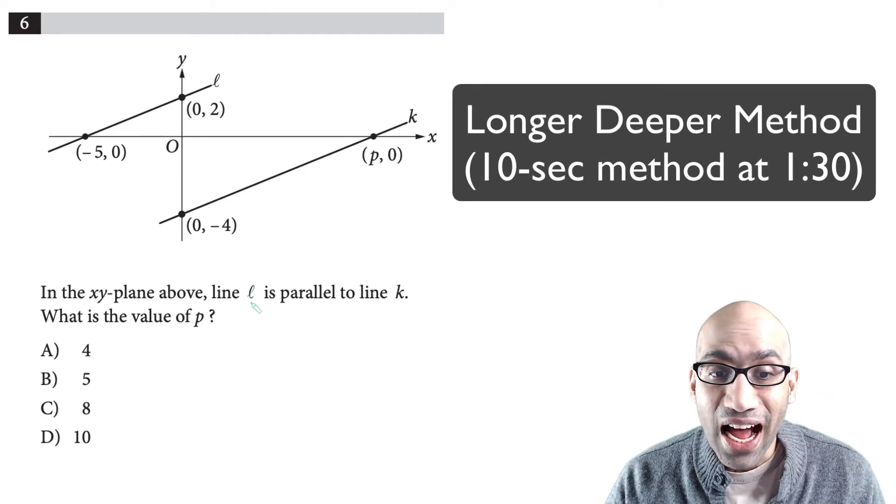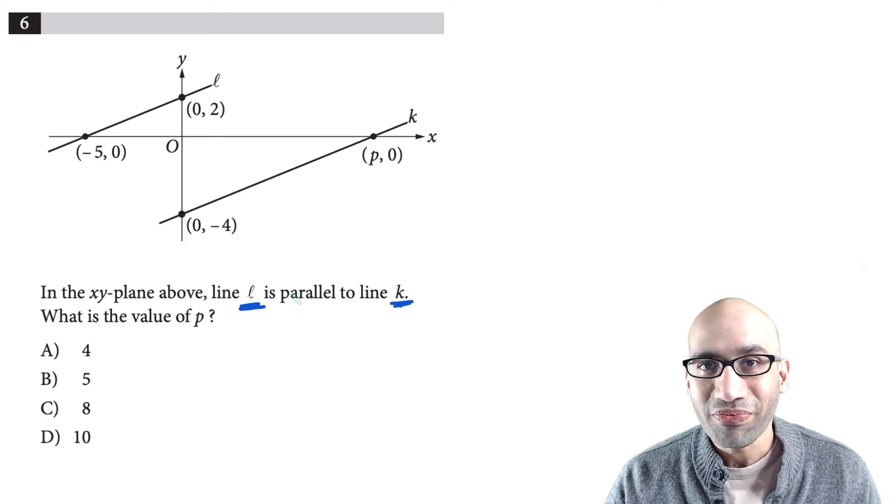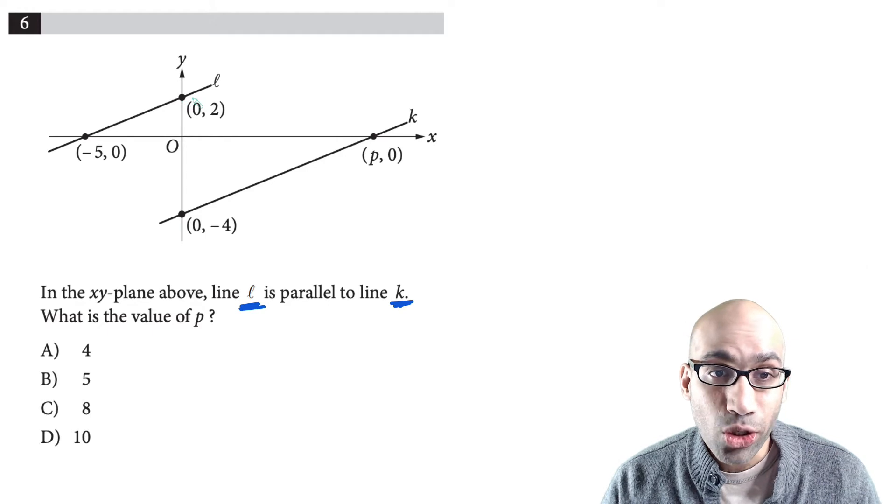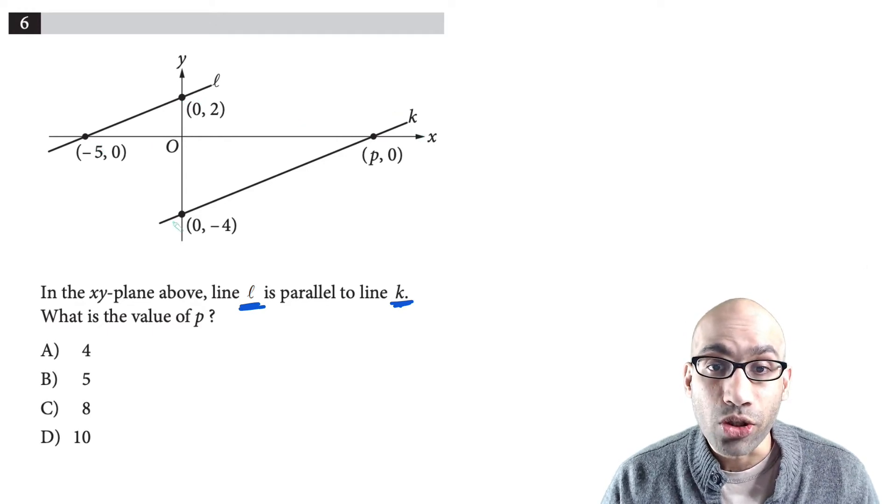You're given line L is parallel to line K. That means you take the slope of line L and that slope is going to be equal to the slope of line K.